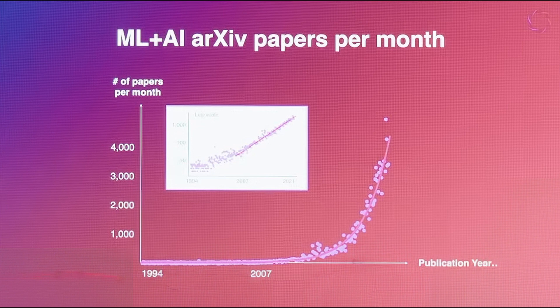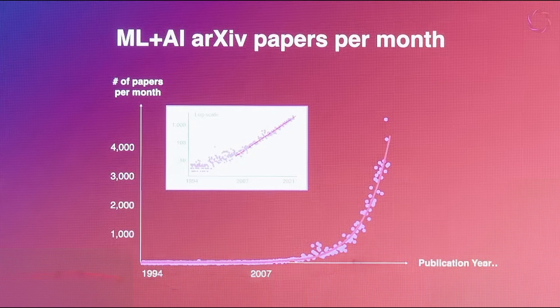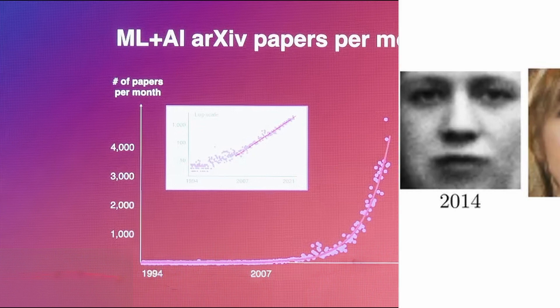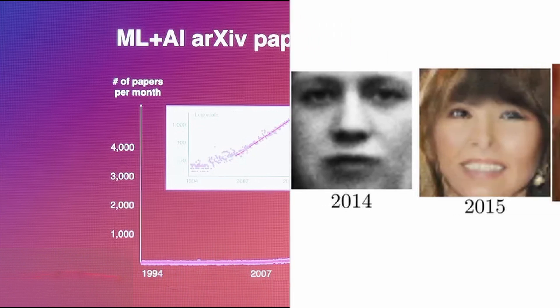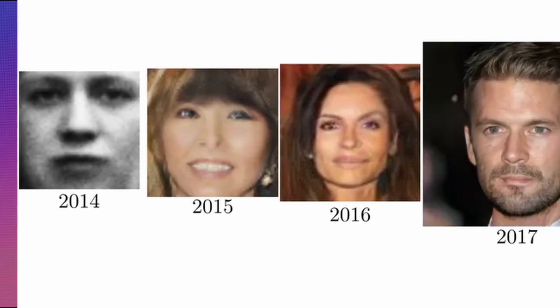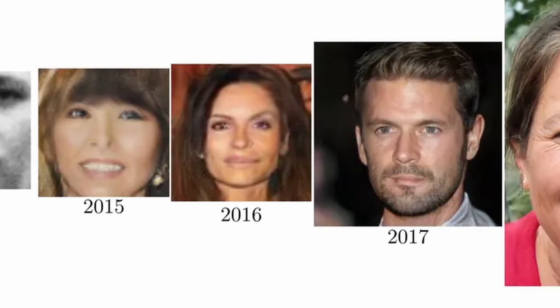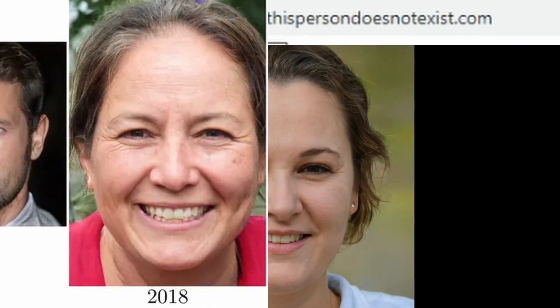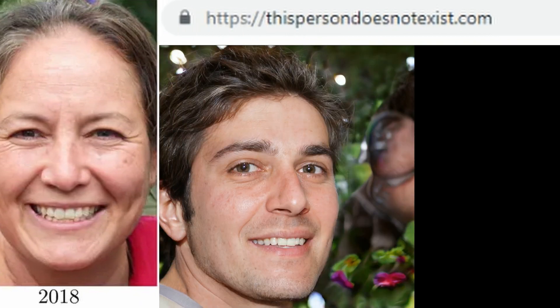The rate that AI research papers are published has risen to a literally exponential upwards curve since 2007, starting with simple, rudimentary face generations back in the day, resulting in small blurry images. The technology has gotten better and better each year.